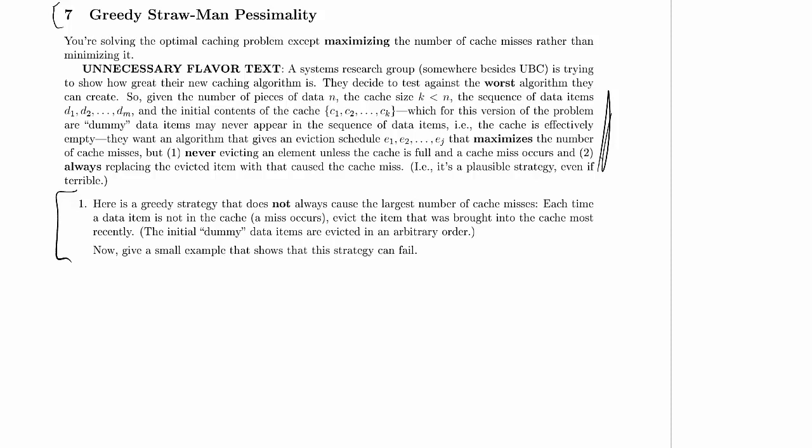So since we're giving a small example that shows the strategy can fail, we could try to do it with just one element in the cache, but there's no choices to be made with one element in the cache, so we're not going to be able to show that it does the wrong thing. Well, let's try it with just two elements. So we're going to start with C1 and C2 in the cache, and I'll just write them across the line here as we do evictions. I'll write in new things.